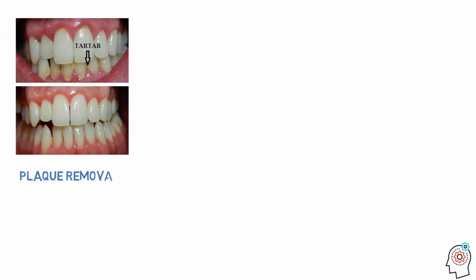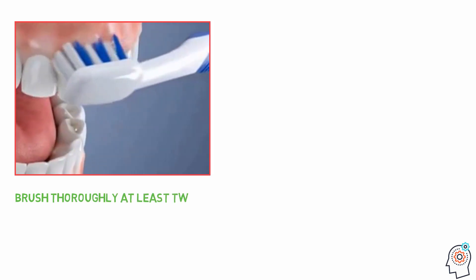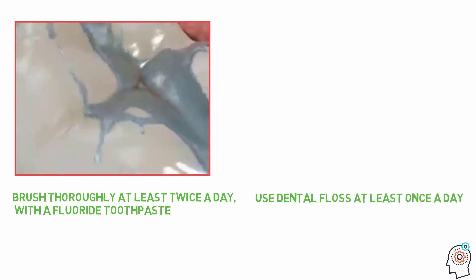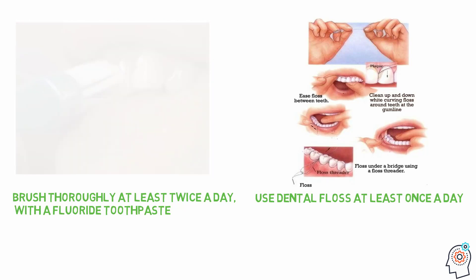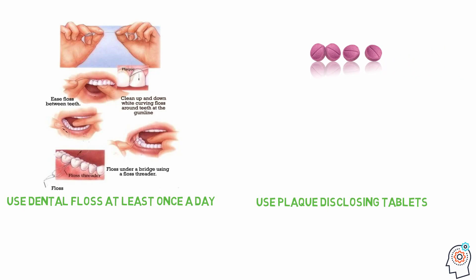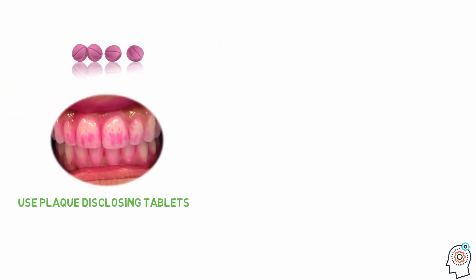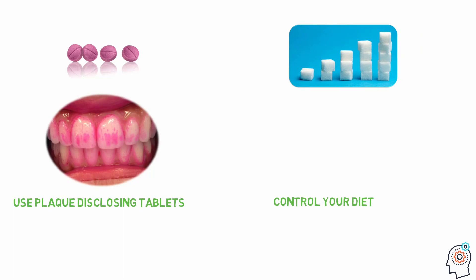The removal of dental plaque from teeth and gums is the first and most important step for maintaining good oral health. The best ways to remove plaque and control its buildup are: brush thoroughly at least twice a day with a fluoride toothpaste; use dental floss at least once a day to remove plaque from interproximal spaces and under the gum line where your toothbrush may not reach; use plaque disclosing tablets to check your teeth after brushing; and control your diet by reducing sugar intake, which helps the growth of plaque bacteria.